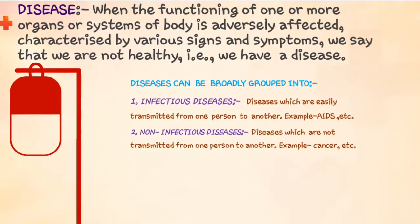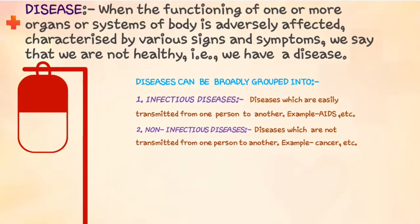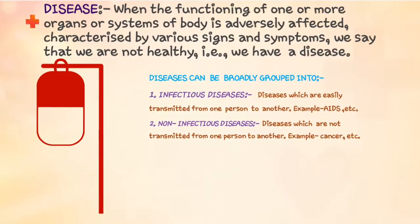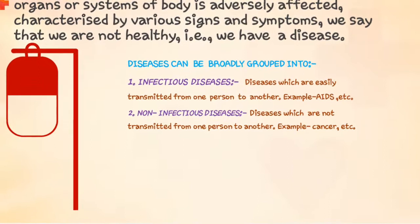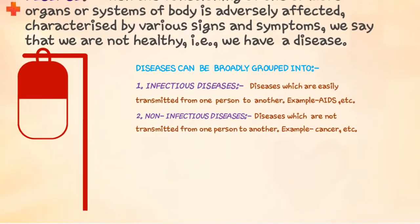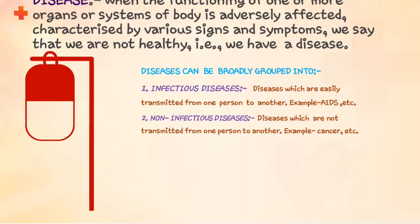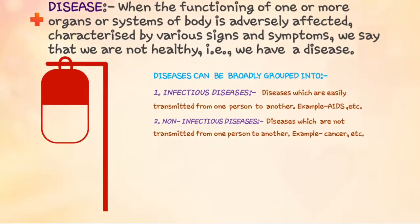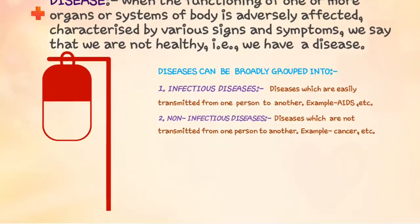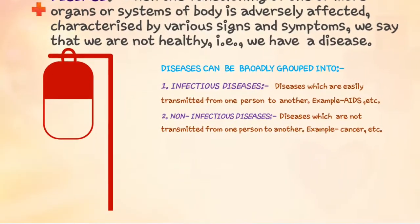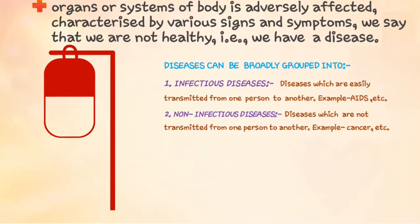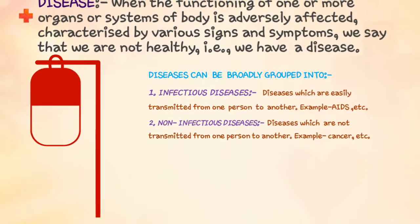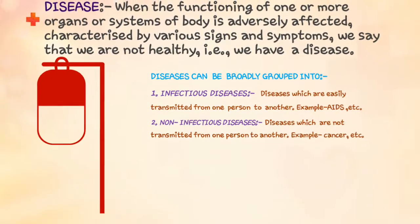Now comes disease. When the function of one or more organs or systems of the body is affected, characterized by various signs and symptoms, then we say a person is having a disease. Diseases are divided into two categories: infectious disease and non-infectious disease. Infectious diseases are easily transmitted from one person to another, like common cold, AIDS etc. Non-infectious diseases do not transmit from one person to another — for example, cancer.